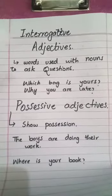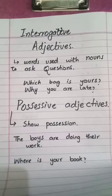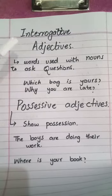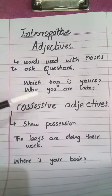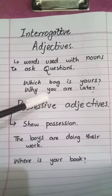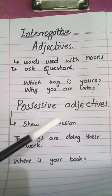Interrogative adjectives are words used with a noun to ask questions. For example, 'Which bag is yours?' — 'bag' is a noun and 'which' adds something to the noun, so it is an interrogative adjective. Similarly, 'Why are you late?' — 'you' is a pronoun, and adjectives can also be used with pronouns. 'Why' is adding something to the pronoun and is asking a question, so it is also an interrogative adjective.